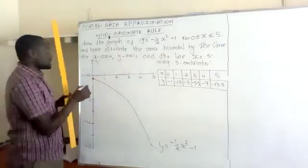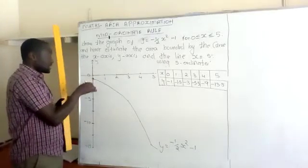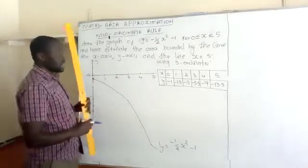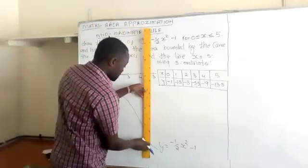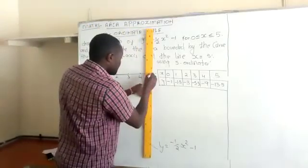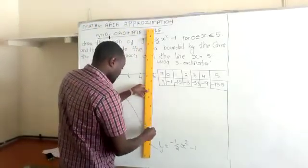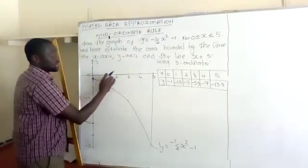the y-axis, this is the other boundary, and the line x equals 5, so we get that boundary there. So this is the area that we need.